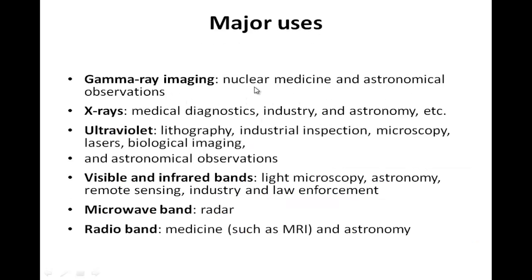There are various uses of image processing. Gamma ray imaging is used in nuclear medicine and astronomical observations. X-rays we already know. Ultraviolet has lots of applications in astronomical observations and biological imaging. Visible and infrared bands are used in astronomy and remote sensing. Microwave bands are used in radars, and then there are radio bands as well.